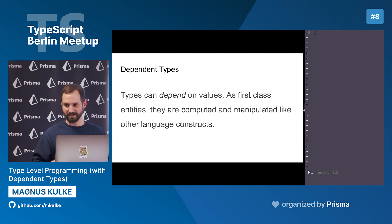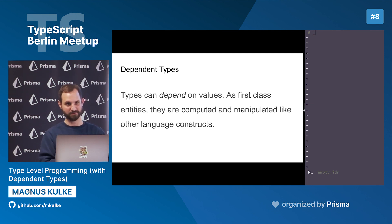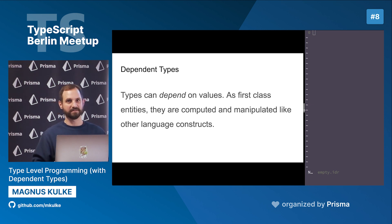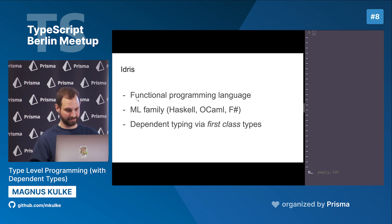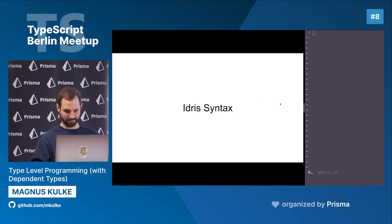One of those things I find really interesting is dependent types, because it's rather esoteric for people in the industry. Dependent types mean that we have types that can also depend on values — usually there's a rift between the type system and the values we deal with, but there's also research that tries to bridge this gap. As first-class entities, you can compute and manipulate types like other language constructs. I picked one example to illustrate this in Idris, a functional programming language from the ML heritage — similar to Haskell or OCaml — which has dependent typing via first-class types.